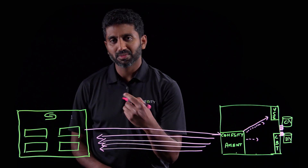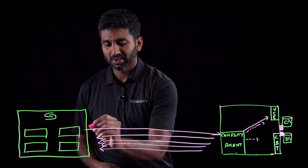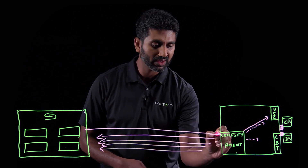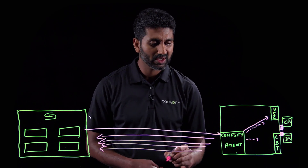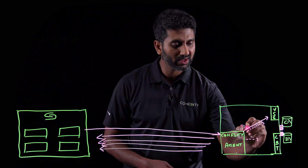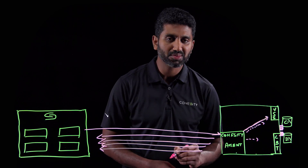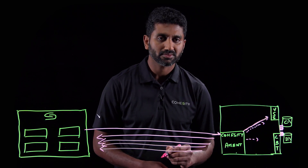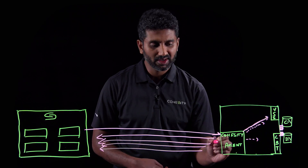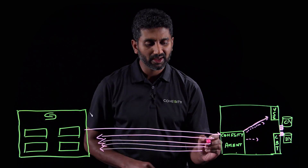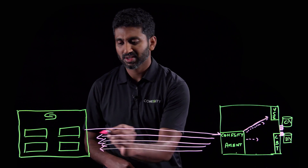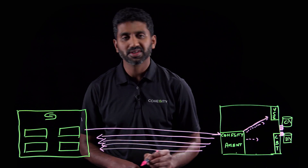When the backup job run kicks in upon a schedule, the Cohesity node establishes contact with the agent, and the agent will instruct the VSS to take a snapshot. Once the snapshot is taken, the data will now be moved across to the Cohesity cluster.